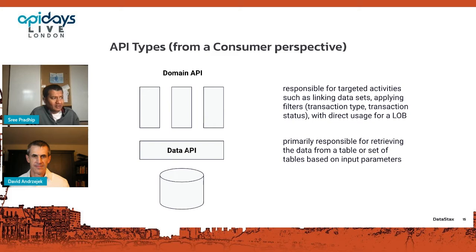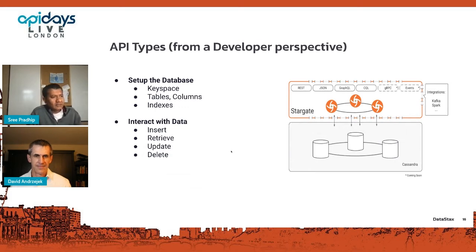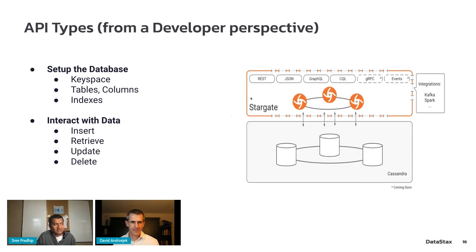That's where we see a distinction between programmers building out the domain API and people working on the data API. What we think about is a data fabric, a data gateway or data federation layer, that prevents you from having to think about where your data is stored and how to get to it — so you can focus on building apps with the tools and technologies you're most comfortable with, whether that's Java, C++, Python, or any variety of API interfaces.